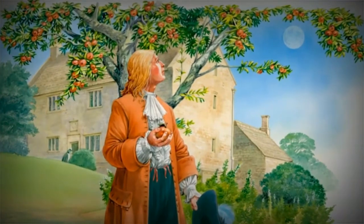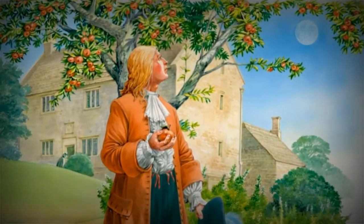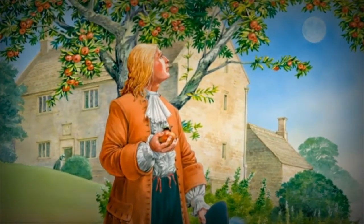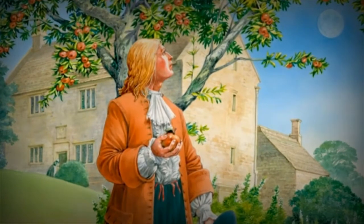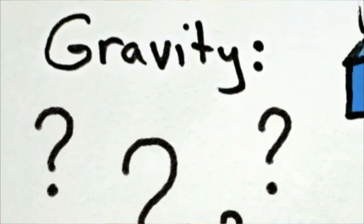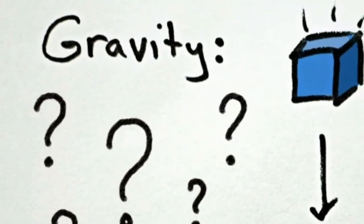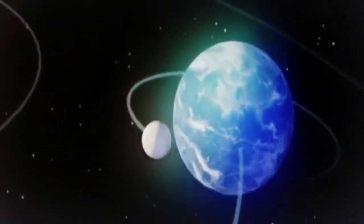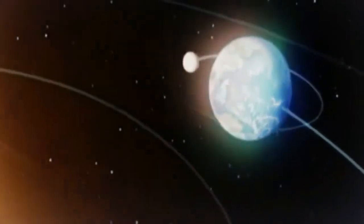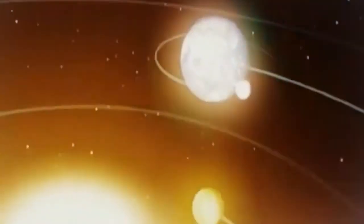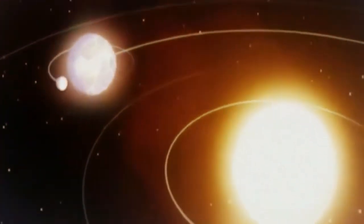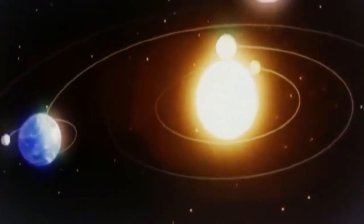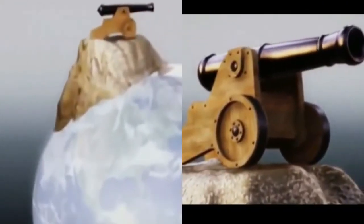Looking at the apple, Newton thought: why did the apple fall down, and why not anywhere else? He started his research and concluded that the force which makes the apple fall to the ground is gravity. He also said that gravity does not only work on Earth, but across the whole universe — everything is bound by this force called gravity.